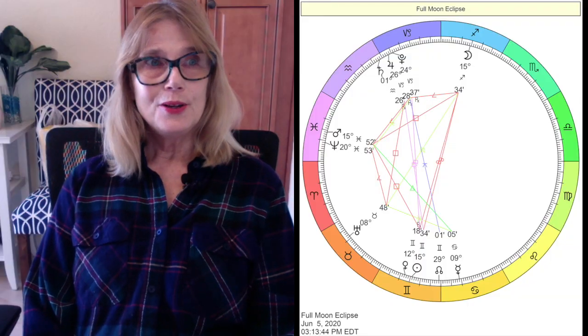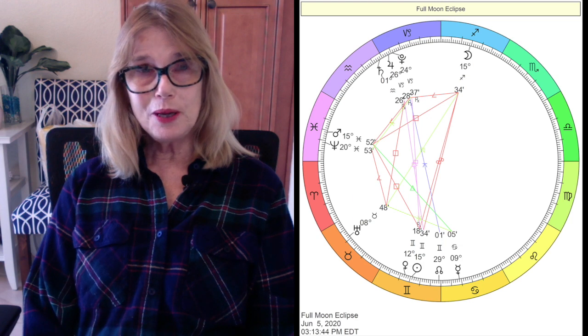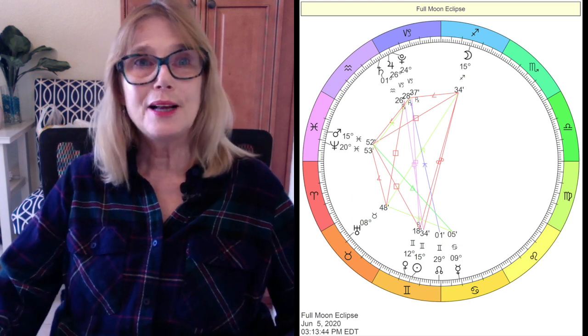Hello, it's Maggie. Today I'm looking at the lunar eclipse coming up on June 5th, 2020. So the eclipse will be at 15 degrees Sagittarius.